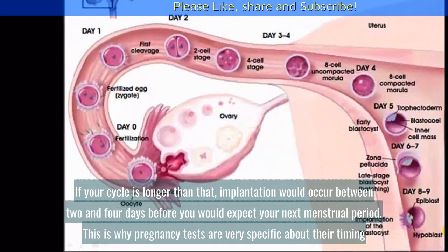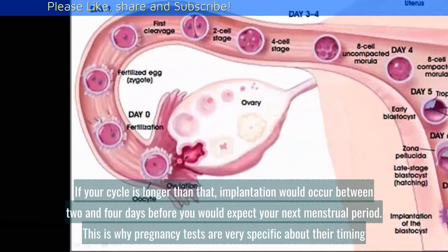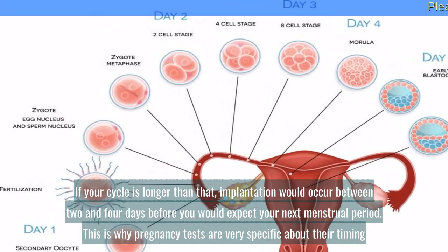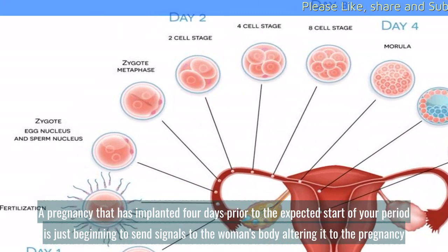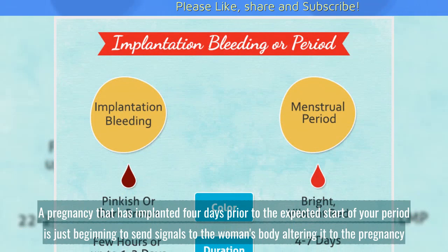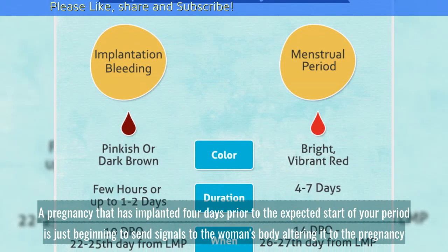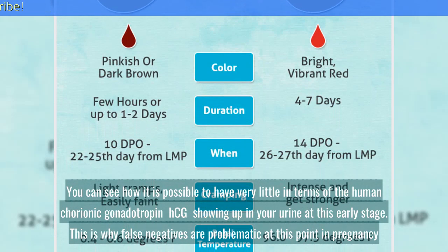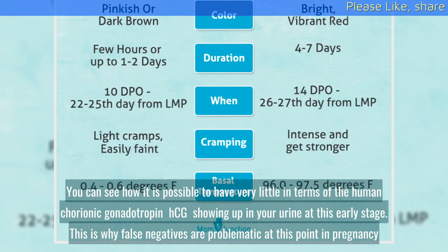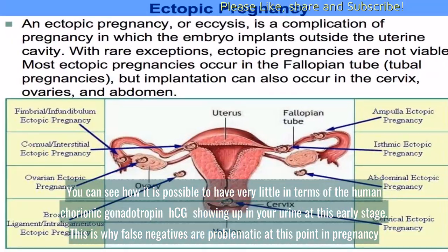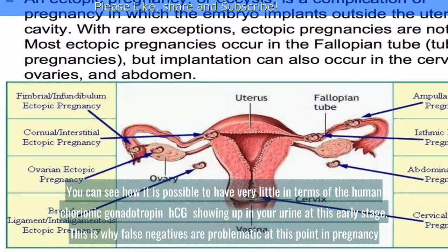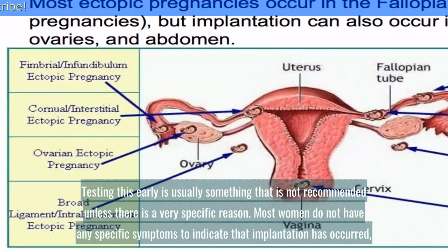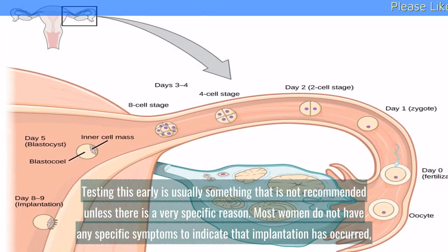If your cycle is longer than that, implantation would occur between 2 and 4 days before you would expect your next menstrual period. This is why pregnancy tests are very specific about their timing. A pregnancy that has implanted 4 days prior to the expected start of your period is just beginning to send signals to the woman's body alerting it to the pregnancy. You can see how it is possible to have very little human chorionic gonadotropin (HCG) showing up in your urine at this early stage. This is why false negatives are problematic at this point, and testing this early is usually not recommended unless there is a very specific reason.